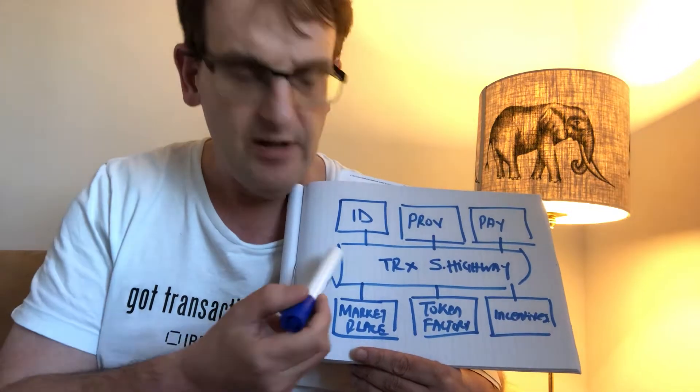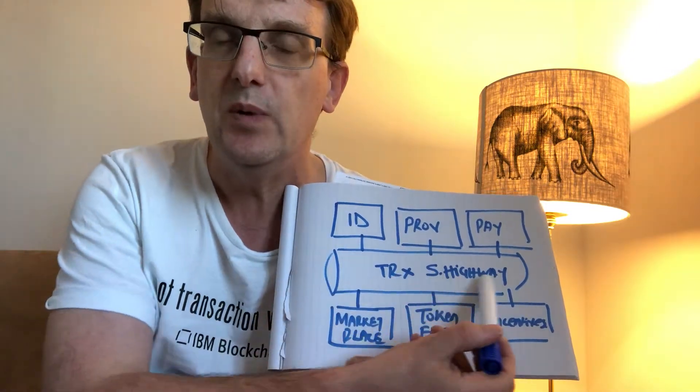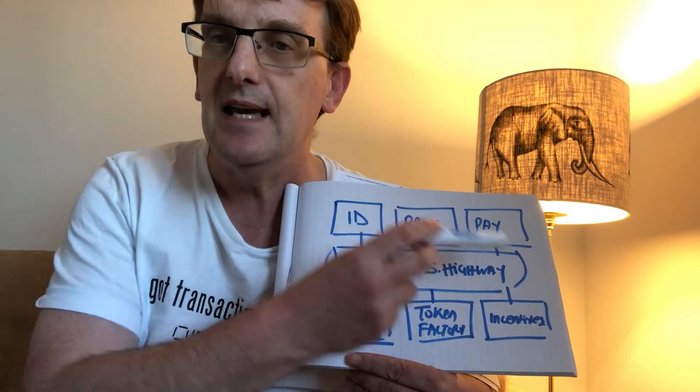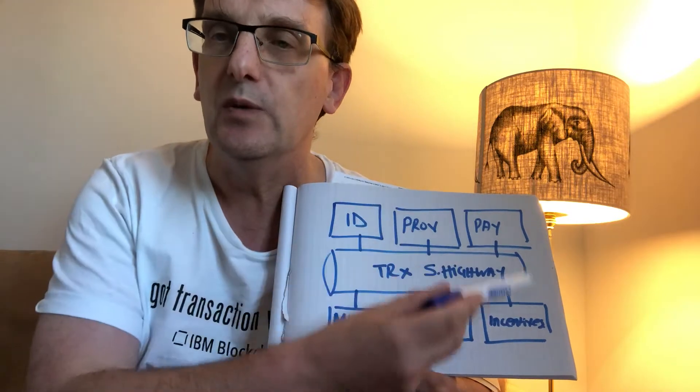If we are going to have this transaction superhighway, what are the various components that we need to stick together to make this transaction superhighway work?